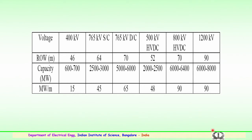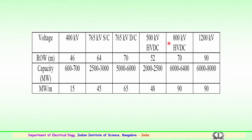A comparison of voltage levels and right of way: 400 kV requires a minimum of 46 meters; 765 kV single circuit requires 64 meters; 765 kV double circuit requires 70 meters; 500 kV HVDC requires 52 meters; 800 kV HVDC is 70 meters — not much different from 765 kV double circuit; and 1200 kV HVAC requires 90 meters minimum right of way.